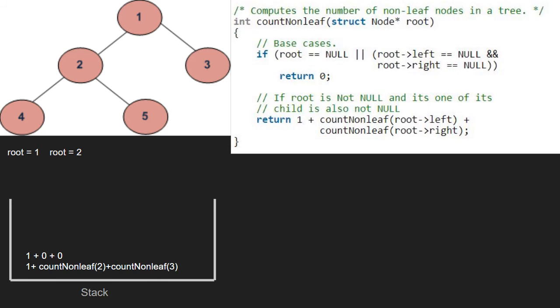Execution for node 2 is also over and we return 1 plus 0 plus 0 that is equal to 1.